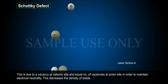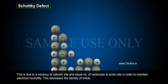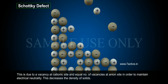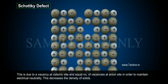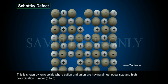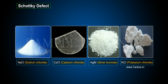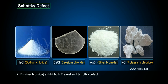Schottky defect: This is due to a vacancy at a cationic site and an equal number of vacancies at the anionic site in order to maintain electrical neutrality. This decreases the density of solids. It is shown by ionic solids where the cation and anion have almost equal size and high coordination number (6 to 8). AgBr (silver bromide) exhibits both Frenkel and Schottky defects.